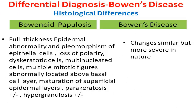Histological differences between these two conditions are minimal, but are more severe in Bowen's disease as compared to bowenoid papulosis. Both are characterized by full thickness epidermal abnormality and pleomorphism of epithelial cells, nucleomegaly, high nucleocytoplasmic ratio, loss of polarity, presence of dyskeratotic cells, multi-nucleated cells, and multiple mitotic figures abnormally located above the basal cell layer. However, bowenoid papulosis shows maturation of superficial epidermal layers, in contrast to Bowen's disease.